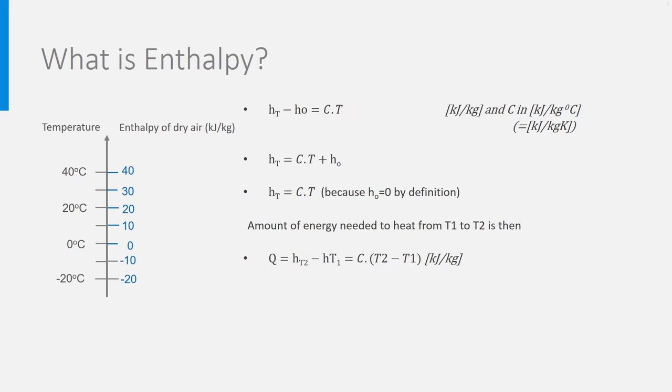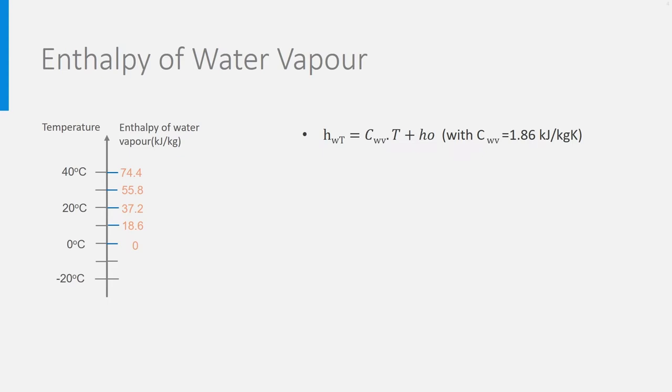Let's take the example of a mass MdA of dry air. The specific heat of dry air is 1 kilojoule per kilogram Kelvin. So, Q is MdA times 1 times the temperature difference.